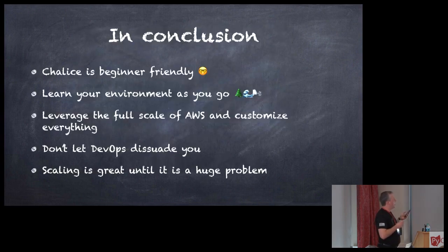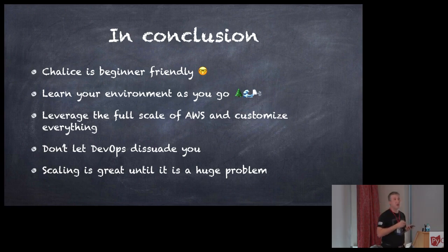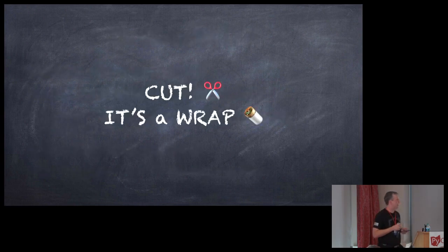In conclusion, Chalice is beginner-friendly. Even though I threw all this great stuff at you, you don't have to have it all. It lets you take things into production, but if you just want to play with it, just do it. Stay within the comfortable simple boundaries, show your work, play with easy stuff, and get into some cool AWS things. Learn the new environment as you go — I did not know most of this when I started. I just needed to do the next thing and discovered this. Leverage the full scale of AWS, customize everything, and don't let the box destroy you. Auto-scaling is great until it just burns everything. Thank you.